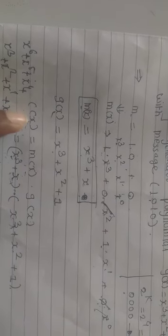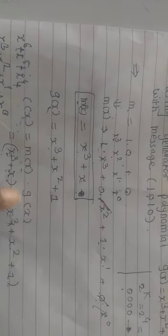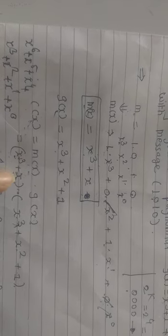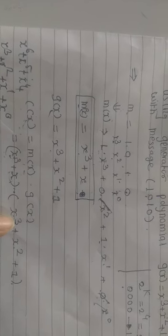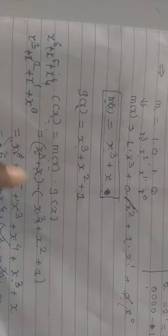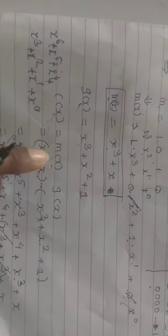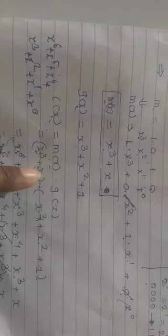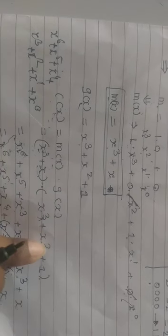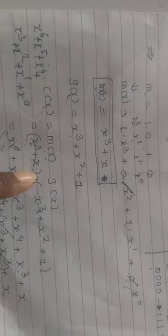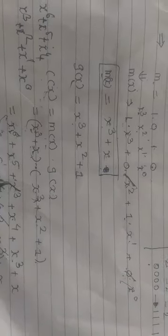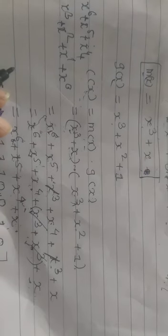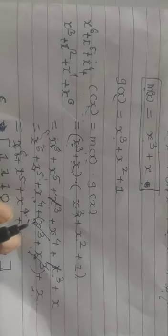G(X) is already given as X³ + X² + 1. So C(X) = M(X) · G(X) = (X³ + X)(X³ + X² + 1). Do the normal multiplication: X³·X³ = X⁶, X³·X² = X⁵, X³·1 = X³, X·X³ = X⁴, X·X² = X³, X·1 = X. Cancel the common terms following Boolean algebra, so the two X³ terms cancel, giving X⁶ + X⁵ + X⁴ + X.